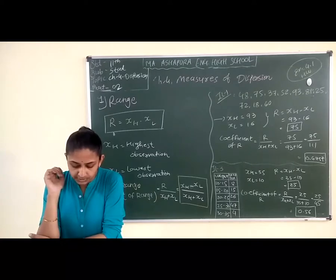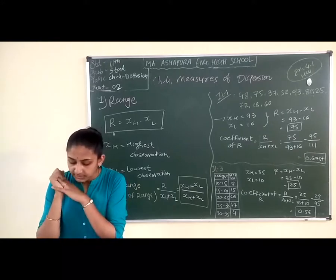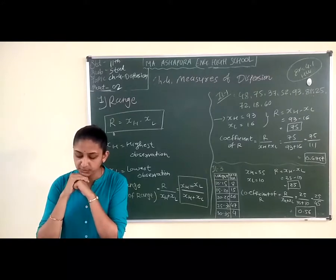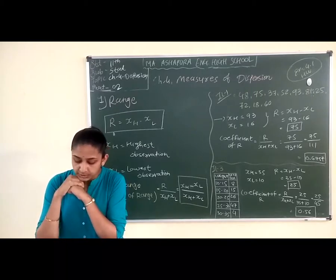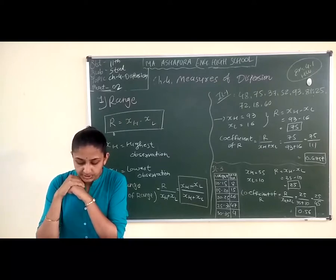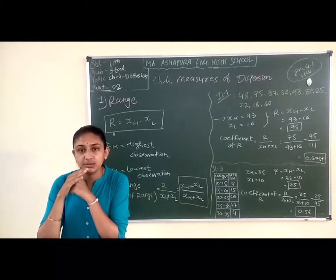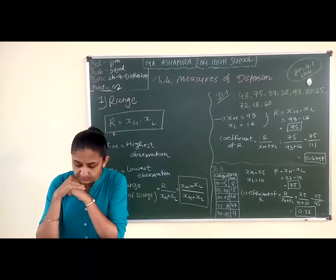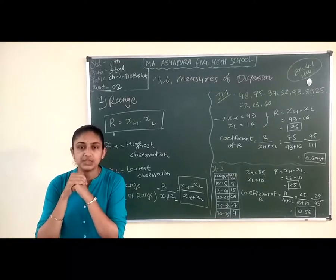If the coefficient of range for a population is small, then it can be said that variability is less in the observations of the population — meaning the values of the population are not far from each other. If the coefficient of range is large, then it can be said that variability is more in the observations of the population, meaning the values of the observations are very far from each other.